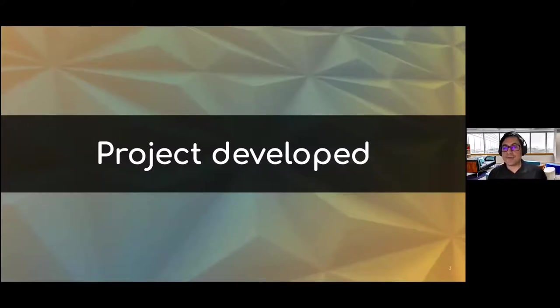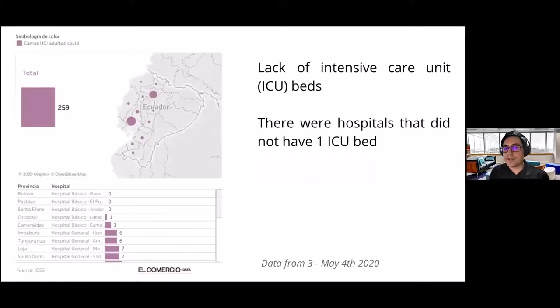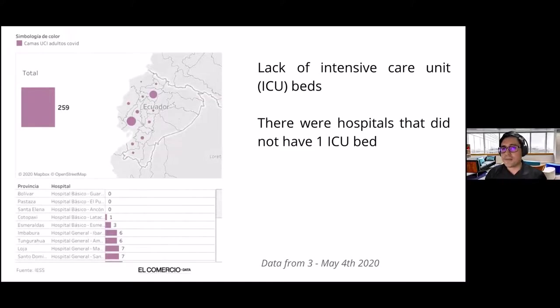Let's start with the project development. In April and May, together with a group of expert engineers and with the Oxygen Project community support, we built an emergency mechanical ventilator that is now published on the Oxygen community page. We built this to solve the problem of ICU access — if a person presents serious symptoms caused by the virus, they would need access to an intensive care unit bed with mechanical ventilators.